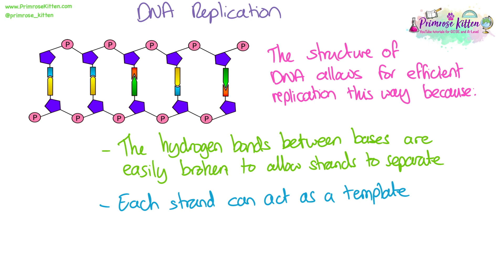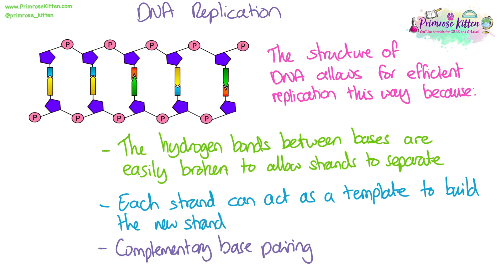Each strand can then act as a template. By being able to split the DNA in half, and because each strand is complementary to the other, we are able to build new strands off each of the two separated strands. What also makes this work so well is that the bases join through complementary base pairing — so when we have our two template strands, the new bases that join will only be A's joining with T's and C's joining with G's.